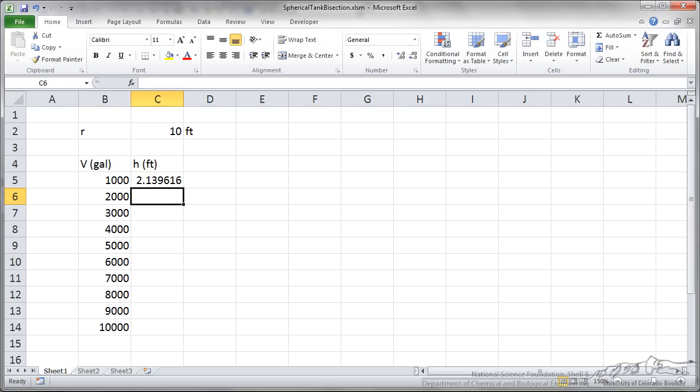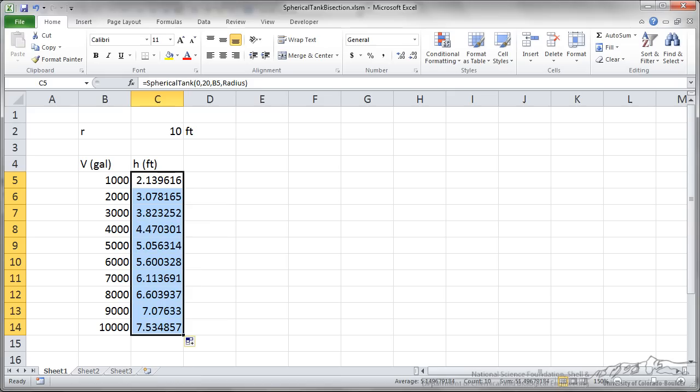And when I press enter, it automatically goes through the bisection technique. It went through 20 iterations. And I can copy this down and fill everything in.